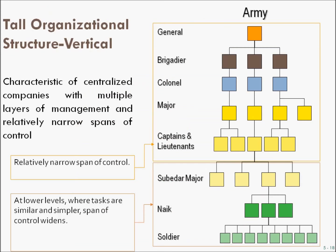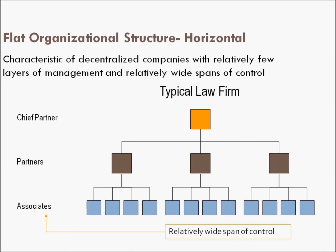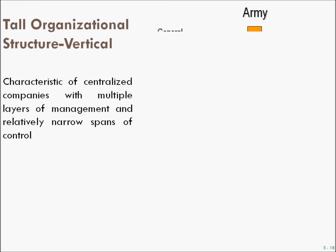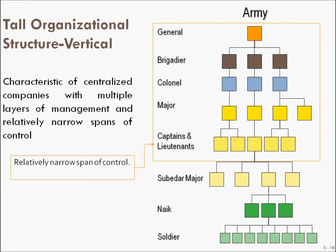A tall organization structure is also called a vertical structure. It is characteristic of centralized companies with multiple layers of management and a relatively narrow span of control. To summarize: in a flat structure the span of control is wide because more people report to one person; in a tall structure, fewer people report to each manager, so the span of control is narrow.